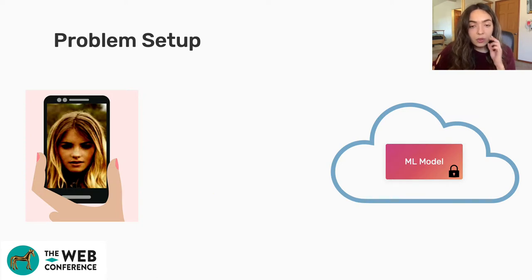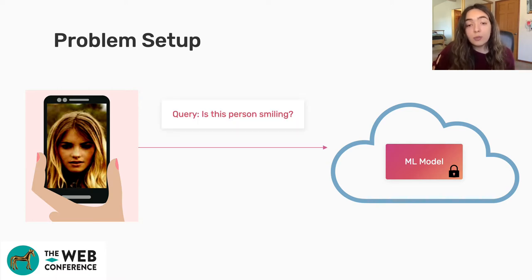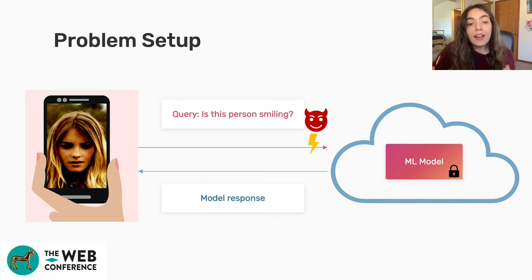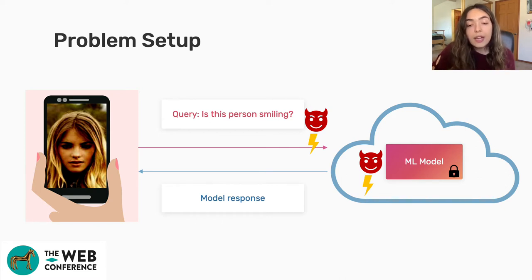The particular privacy problem we're trying to tackle is one where a user is sending a query to a deployed machine learning model on a remote server and asking a question like, is this person smiling? The privacy problems here include an adversary who can intercept this connection and try to infer information about the query, or an adversary with access to the ML service provider who can try to infer other attributes such as the person's hair color, whereabouts, or whether they're wearing glasses.